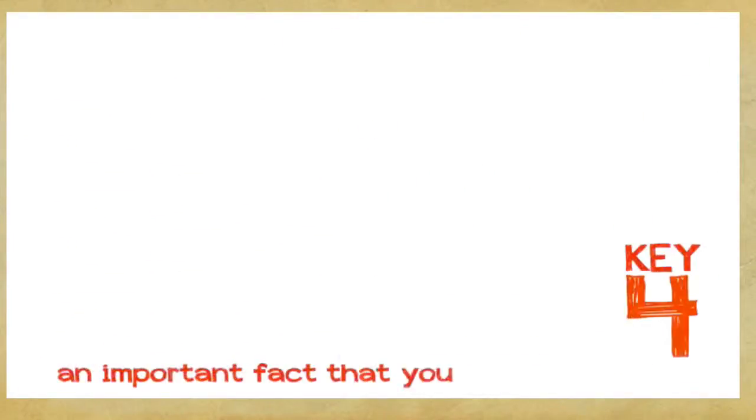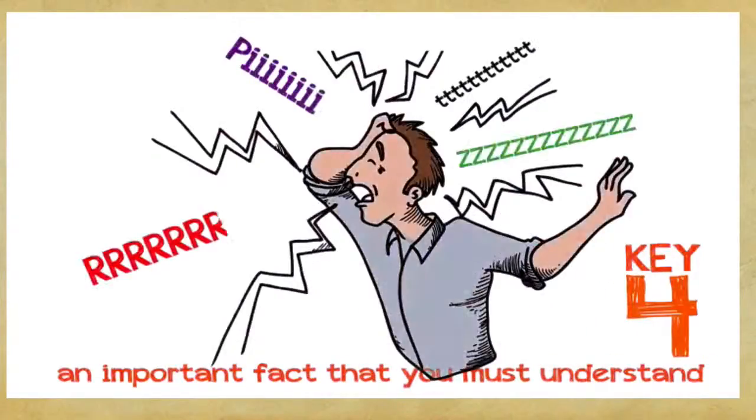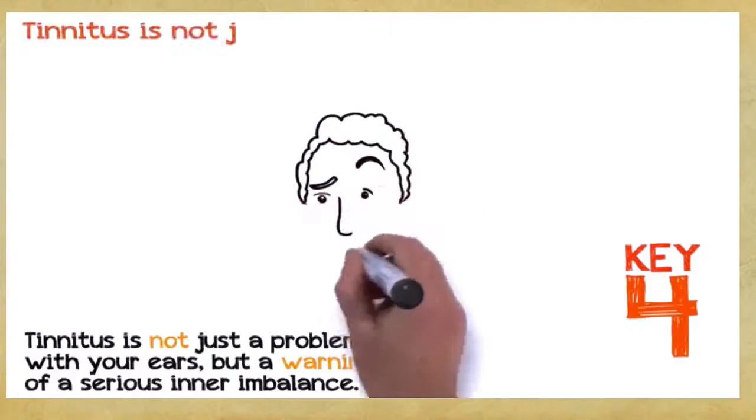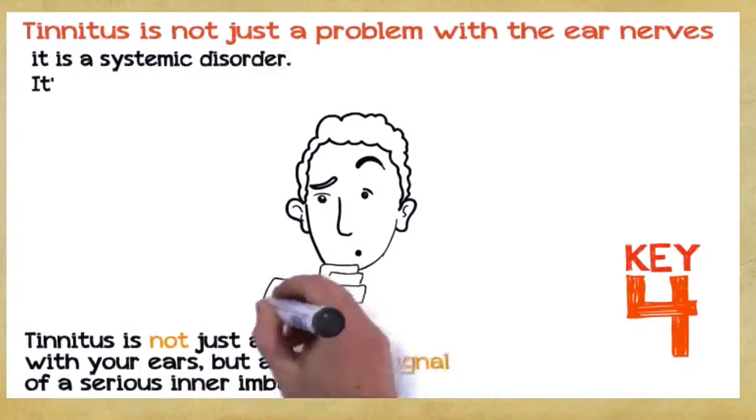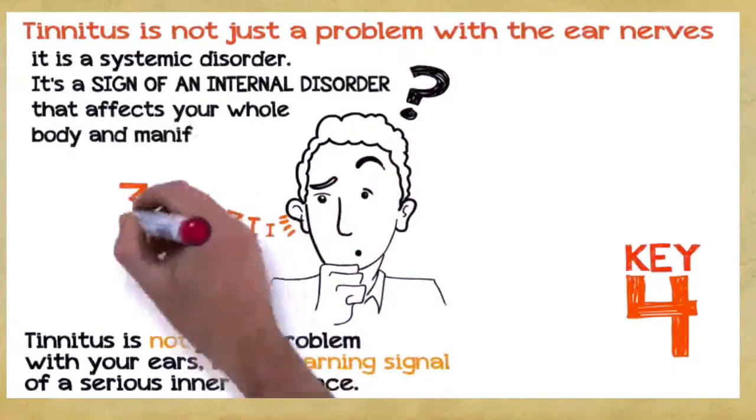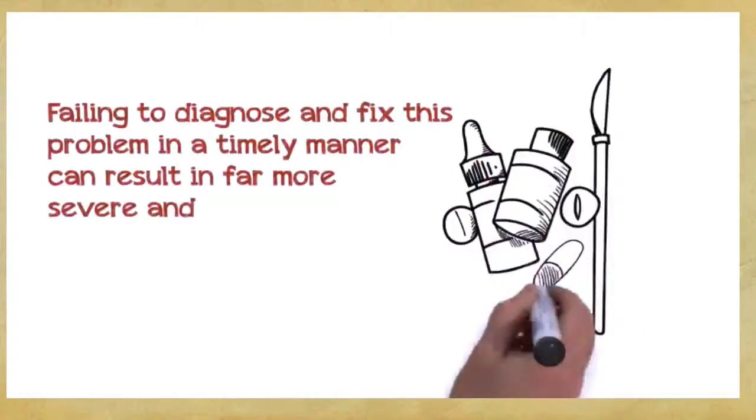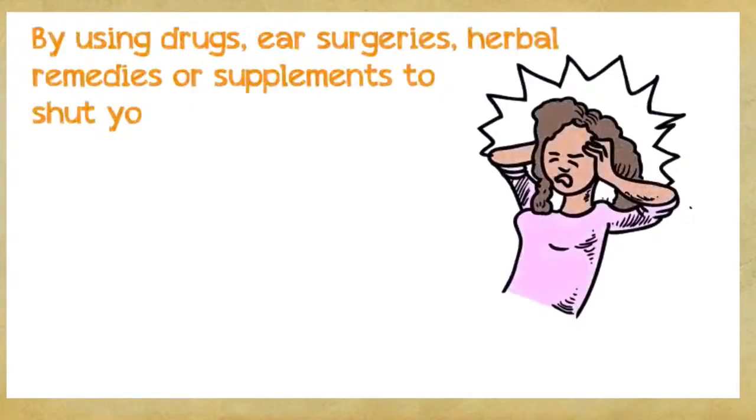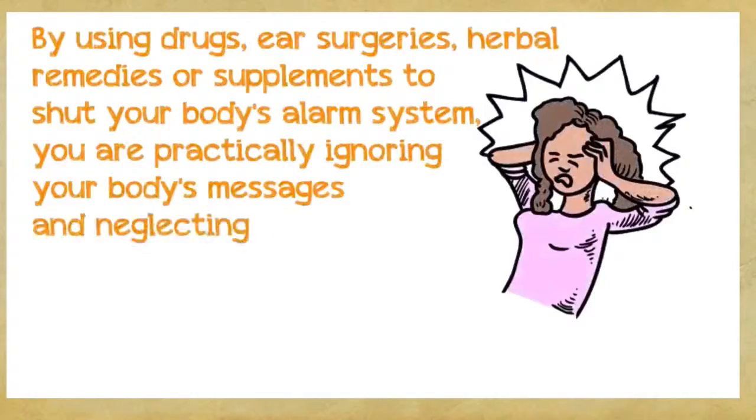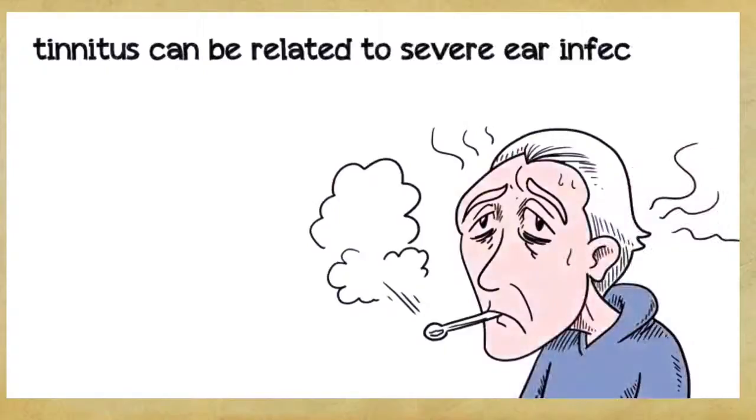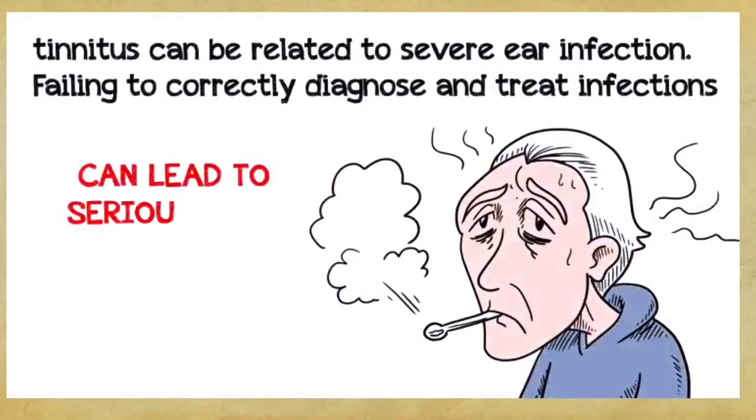Key number four: This is a very important fact that you absolutely must understand if you want to save hundreds or even thousands of dollars. Tinnitus is not just a problem with your ears, but a warning signal of a serious inner imbalance. In the vast majority of cases, tinnitus is not just a problem with the ear nerves, it's a systemic disorder. It's a sign of an internal disorder that affects your whole body and manifests as sounds in your ears. Tinnitus is simply a big warning sign that something inside your system is wrong and needs to be corrected. Failing to diagnose and fix this problem in a timely manner can result in a far more severe and chronic disorder, which can seriously endanger your health. By using drugs, ear surgeries, herbal remedies, or supplements to shut your body's alarm system, you're practically ignoring your body's messages and neglecting the root cause of your tinnitus, thus making your condition worse in the long run. For example, tinnitus can be related to severe ear infection. Failing to correctly diagnose and treat infections can often lead to serious long-term health consequences.